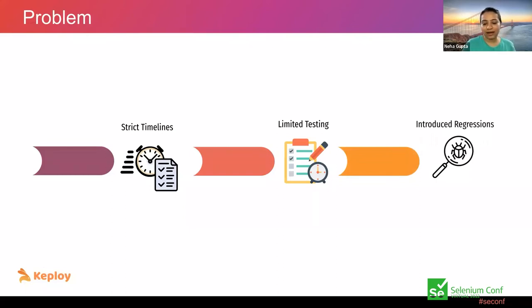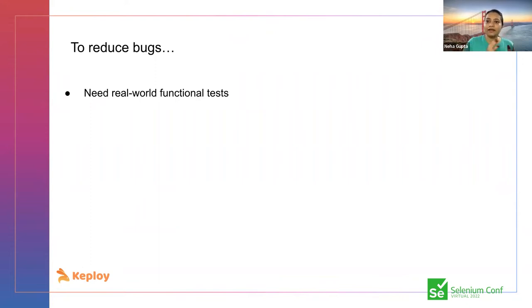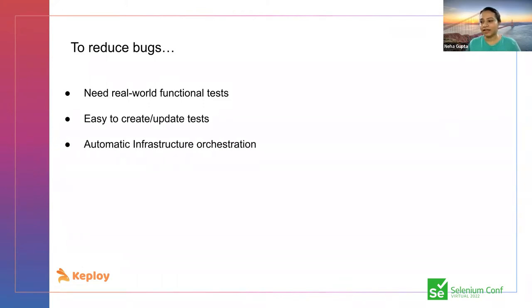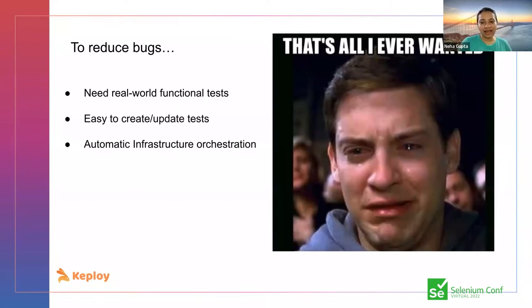To keep our releases on track, we wanted three things from our automated testing process. First, functional test cases — a tool that can bring out real-world scenarios from production so we can do functional testing and see if any regression is introduced. Second, something easy to write and update because time is limited. Third, something that can mock infrastructure automatically without requiring manual input.